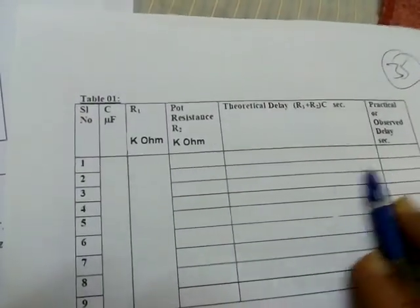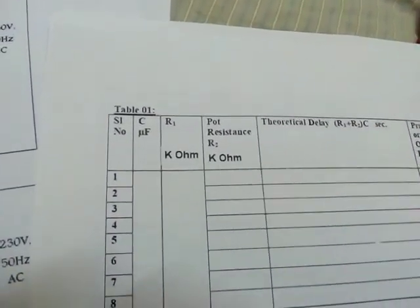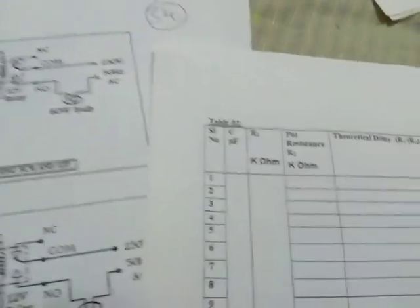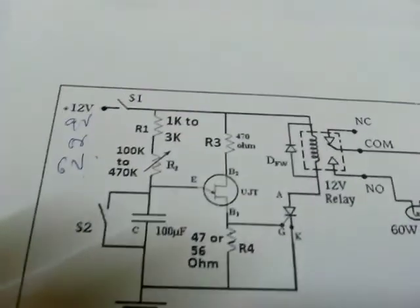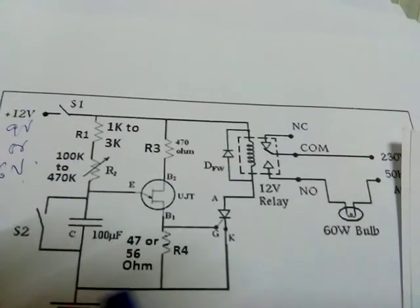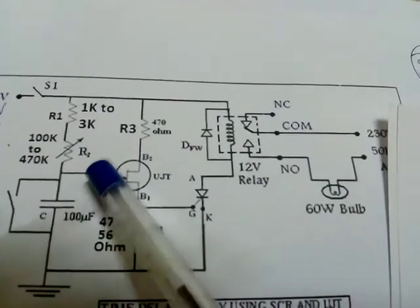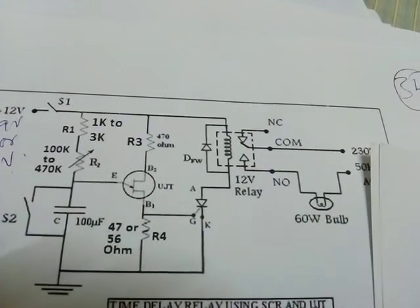So, like that, go on increasing the pot resistance, till you get full value of the pot. In case, the circuit is not working, you replace the UJT or capacitor and check for loose connections. Also, check for whether you have connected UJT properly. Emitter, B2, B1. You know the pin configuration of UJT. Take care about that.